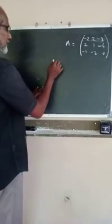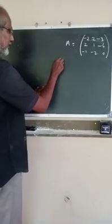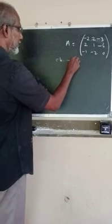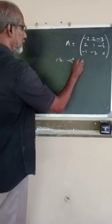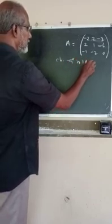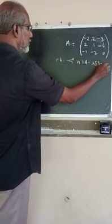First of all, we can find the characteristic equation. The characteristic equation is determinant of A minus lambda I is equal to 0.